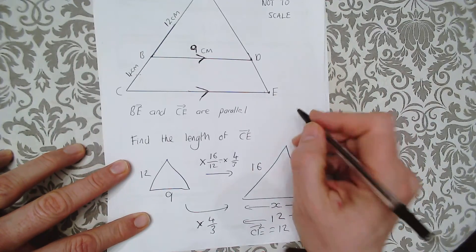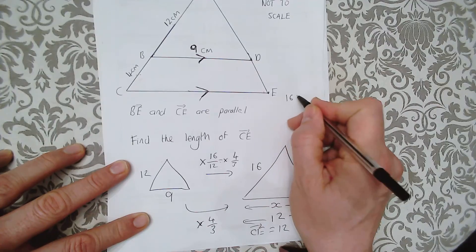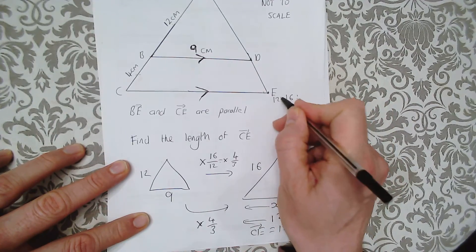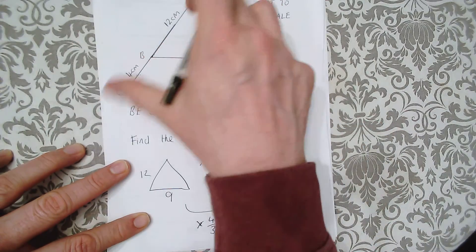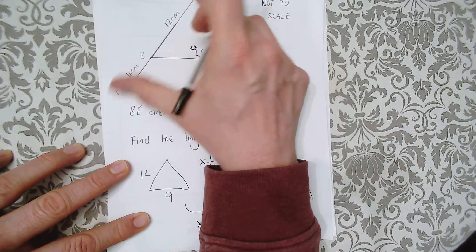You can also see this as a ratio. So 12 to 16 is the ratio of lengths, 12 to 16.